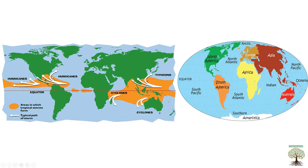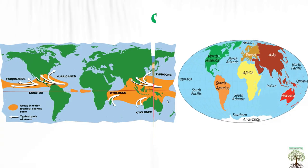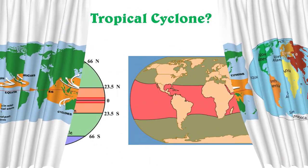The oceans include the South Pacific, North Pacific, North Atlantic, South Atlantic, Indian Ocean, and Southern Ocean. According to the occurrence of cyclones in these regions, the respective names are given. Don't confuse between the three terms — hurricane, cyclone, and typhoon — they are all the same.